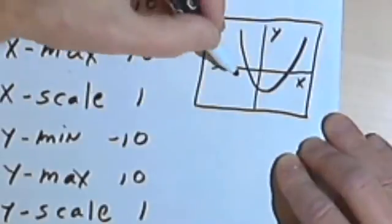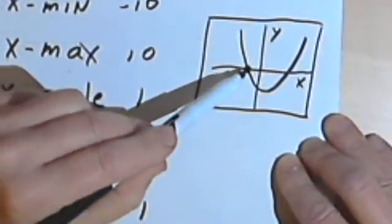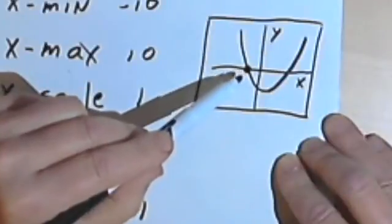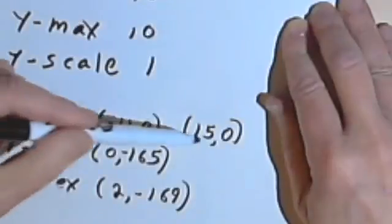And I want to make sure I include the point where I have my x-intercepts. I've got two x-intercepts. One's at negative 11, one's at 15.